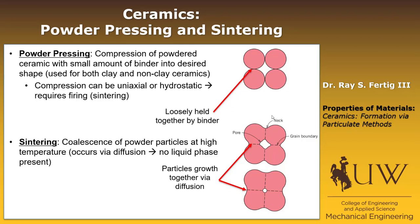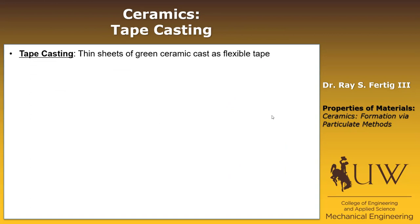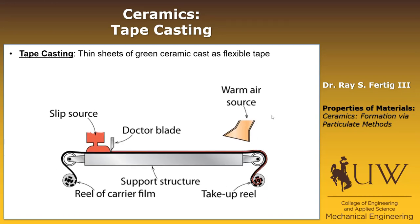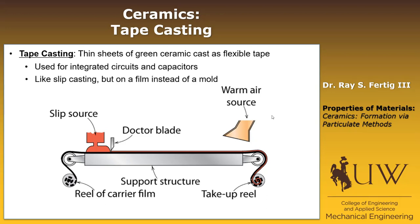The final traditional manufacturing process is tape casting — thin sheets of green ceramic produced as a flexible tape. It's used for integrated circuits and capacitors. It's essentially the same thing as slip casting: a suspension of particles, but instead of having a mold absorb the moisture, we have an evaporative effect removing the moisture, still producing the same green structure.